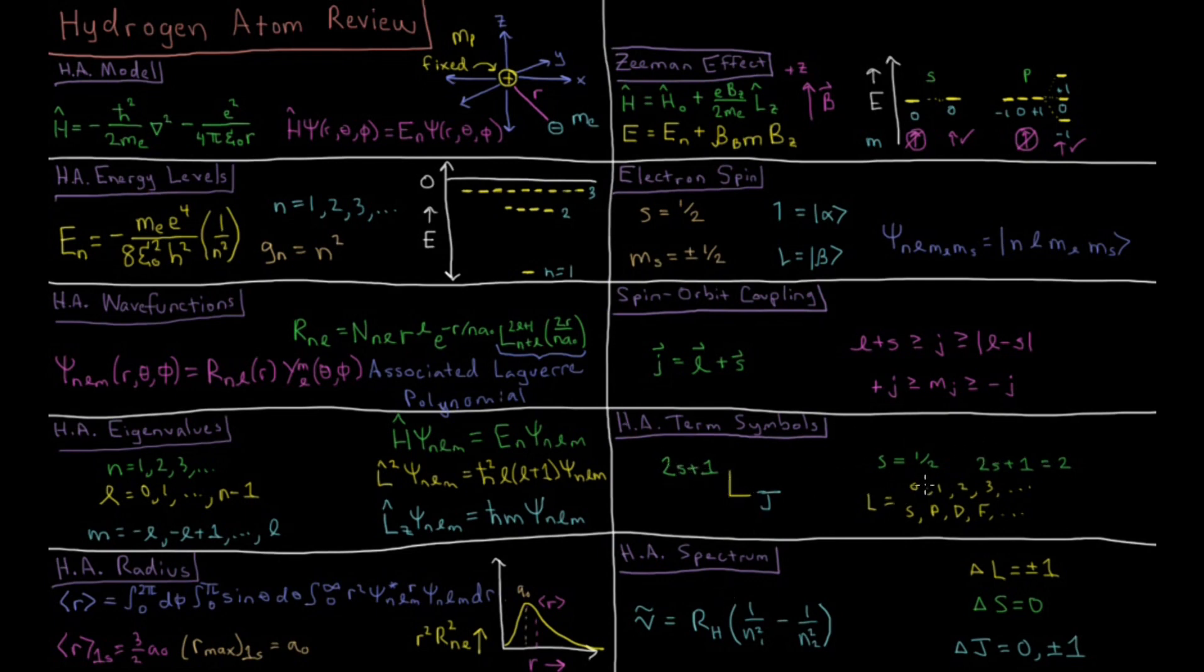For l equal to 0, 1, 2, 3, etc., it's referred to as capital S, capital P, capital D, etc. Then j will take on values which are constrained by the values of l and s. We go through examples for how to determine that.